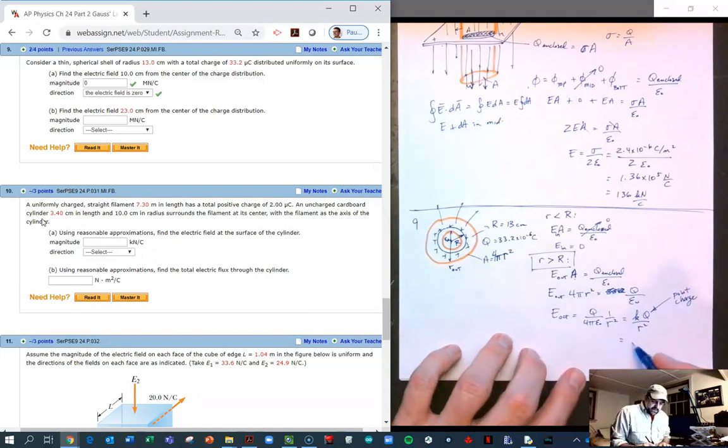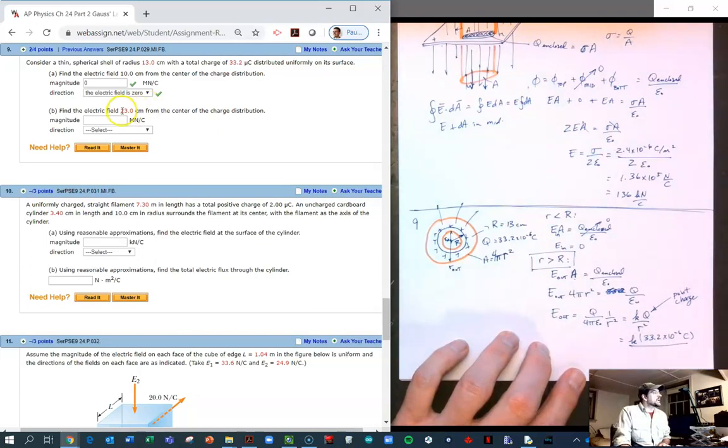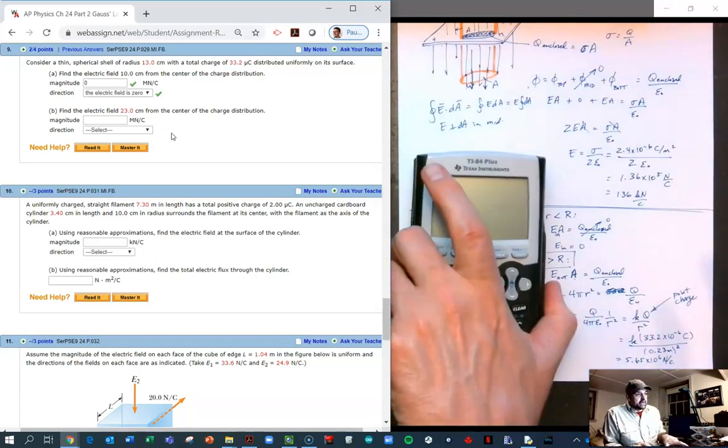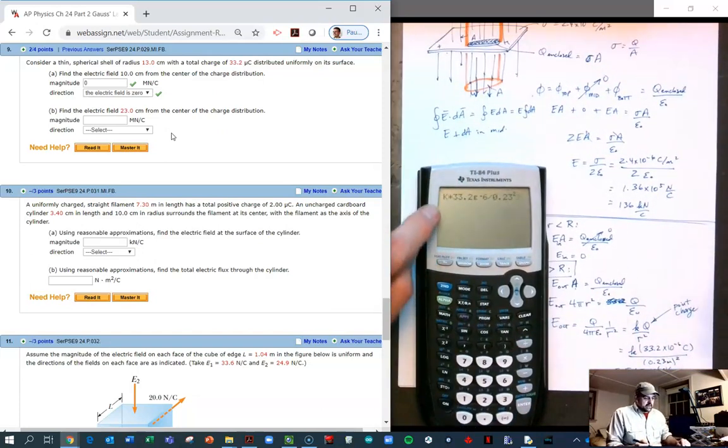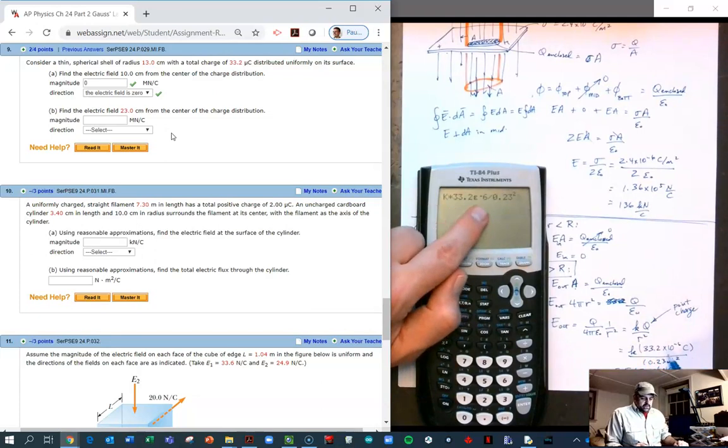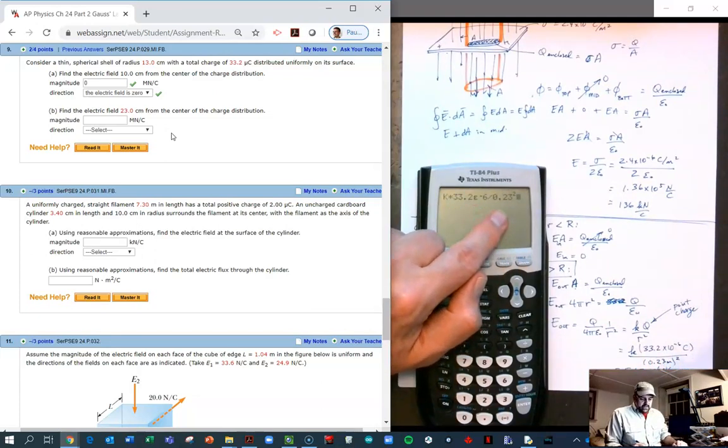Now all that's left to do is to plug numbers in. We can take our 33.2 times 10 to the minus 6 coulombs. For my problem, it's asking for what is the electric field when it's 23 centimeters from the center. So the radius of my Gaussian is 23 centimeters or 0.23 meters, and don't forget we have to square that. When you do that out, it becomes 5.65 times 10 to the 6 newtons per coulomb. I've got that here in the calculator just so you can see it.